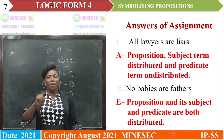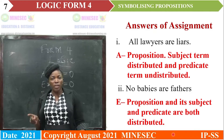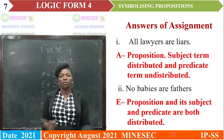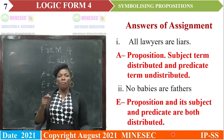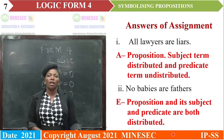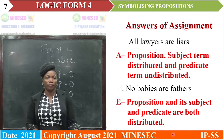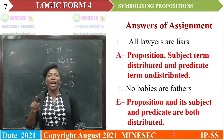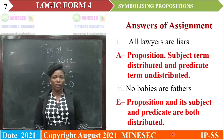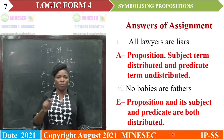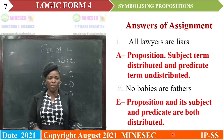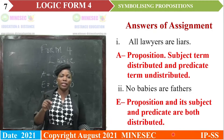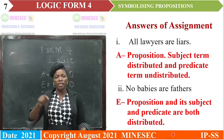Take note: with the A proposition, the subject term is distributed and the predicate term is undistributed. The second proposition: 'No babies are fathers.' This is an E proposition — that is, a universal negative proposition. Its subject term and predicate term are both distributed.